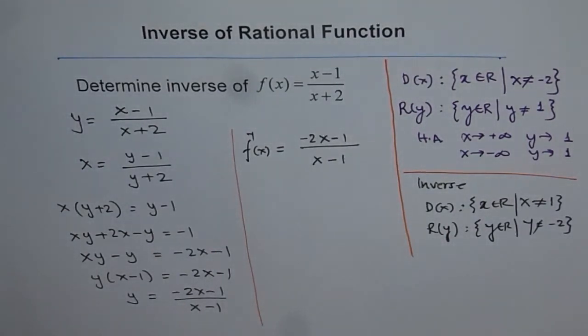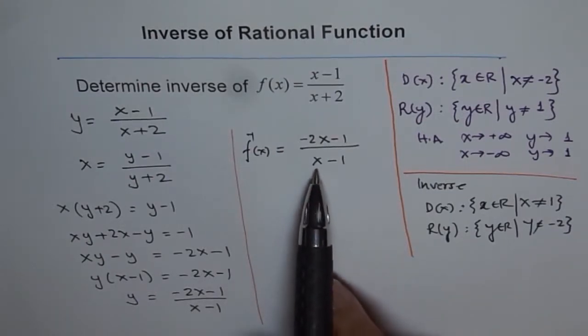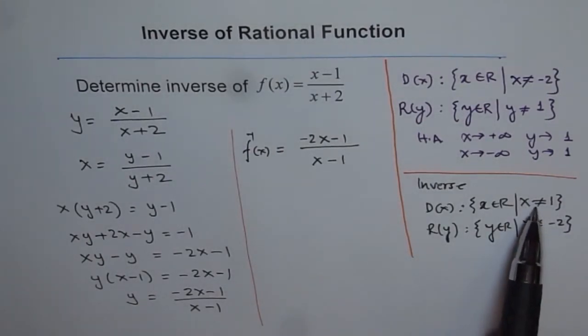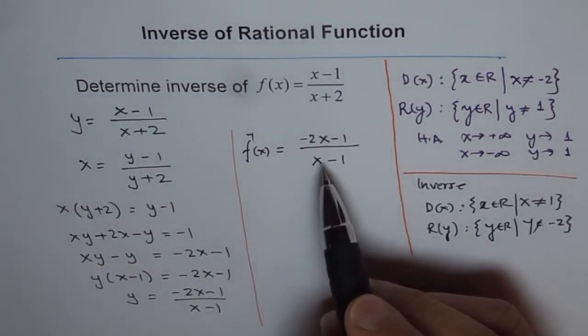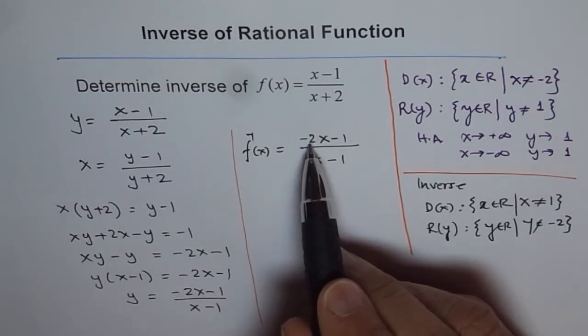So that is the inverse of the given function. As you can see here, the restriction is that x is not equal to 1 in our domain. And if x is a very large number, then the function really approaches minus 2, because x is very large.